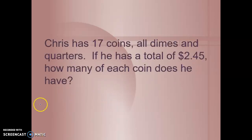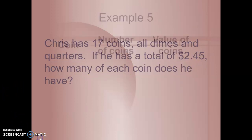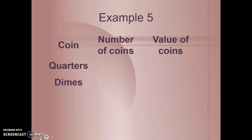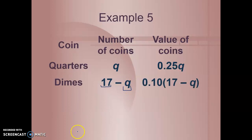We have created that chart, and now let's look at this problem. Chris has 17 coins, all dimes and quarters. If he has a total of $2.45, how many of each coin does he have? Let's take a look at what we know. We know that he has quarters. We don't know how many, so we'll write Q. And we know that he has a total of 17 coins. So 17 coins minus however many quarters he has will let us know how many dimes he has. We can write the value: 0.25Q for quarters and 0.10 times however many dimes he has, represented by 17 minus Q.